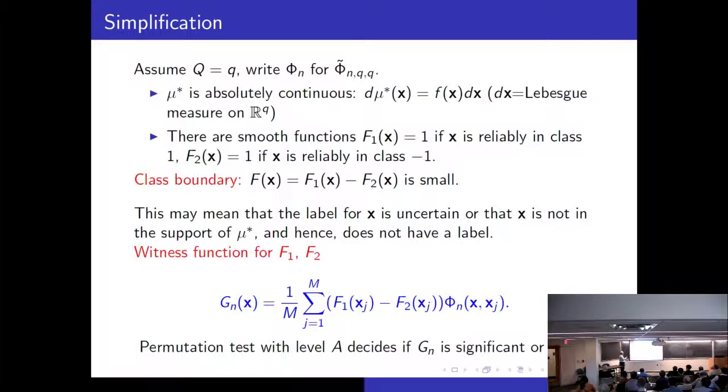So here are some simplifications. We are not talking in this paper about subspaces and submanifolds. We will just assume the whole thing. Which in practical term means that we have to do feature selection separately. We will assume that the right features are selected so that we are directly working in the latent space of the problem. And we are going to assume that in this latent space our probability distribution is absolutely continuous. And then let's assume that the feature spaces are selected properly so that the classes are sufficiently well separated. And if they are well separated then there is a function F_1 if it is reliably in class 1 and F_2 is 1 if it is reliably in this other class. And then I am looking at this difference. If this difference is small then it means one of the two things. Either the label is not certain or it doesn't have a label.